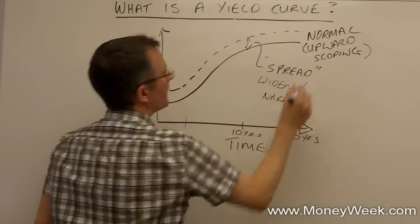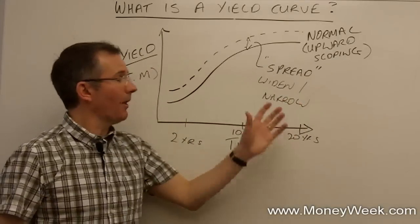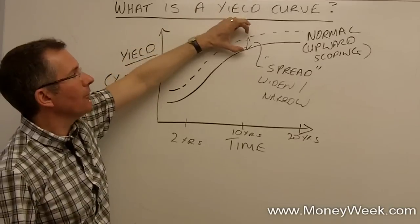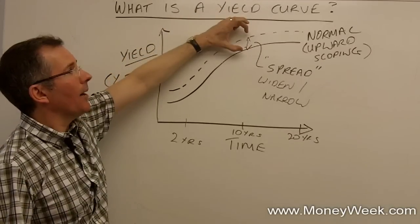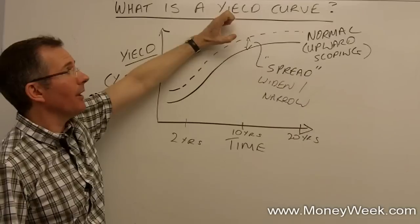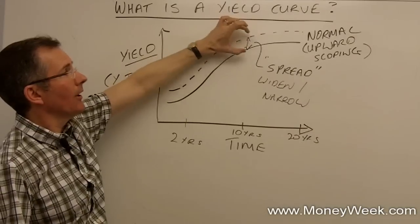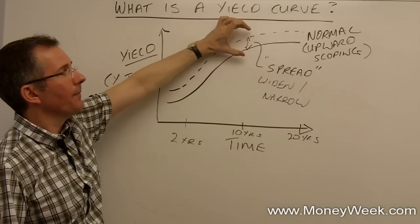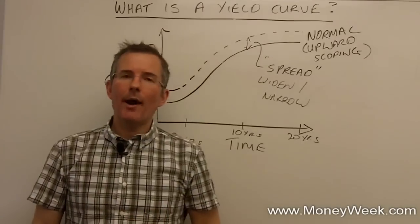This is really just jargon. Now that, you might have guessed correctly, just suggests that this can change. So, as the perception of relative risk, for example, between Tesco and the UK government changes, so that gap can either narrow or widen. So, that's just another piece of jargon to be aware of.